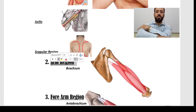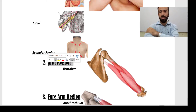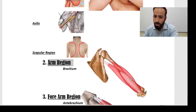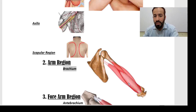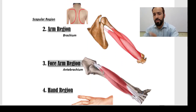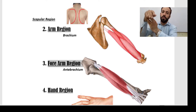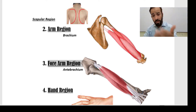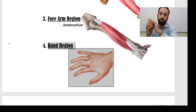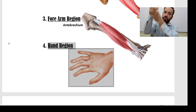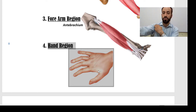The second region of the upper limb is the arm, also known as the brachium. The third region is the forearm — from the elbow joint up to the wrist joint. From the wrist joint up to the tips of the fingers you have the hand region. So from the wrist to the elbow is the forearm, and from the elbow up to the shoulder joint or pectoral girdle is the arm.